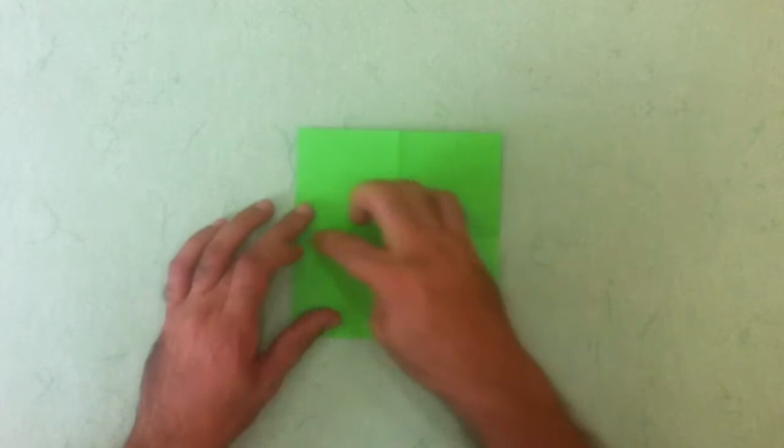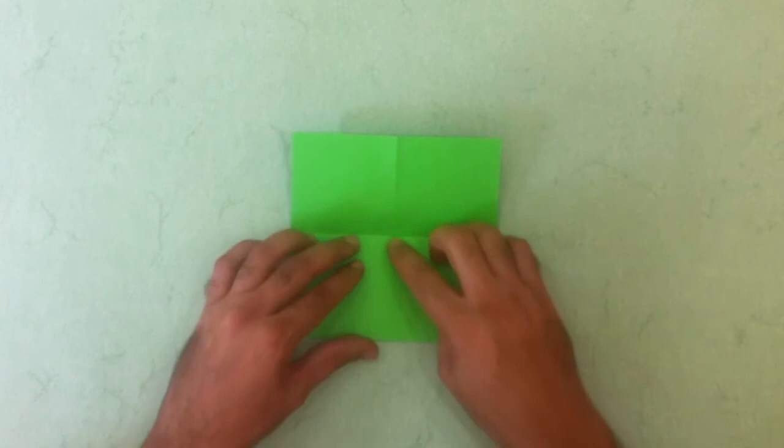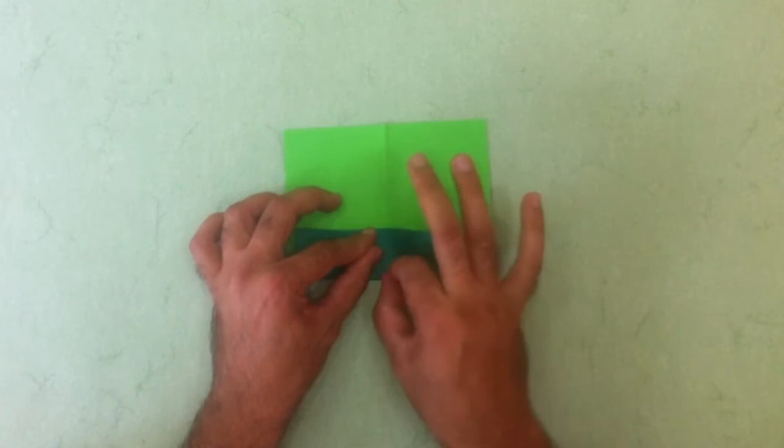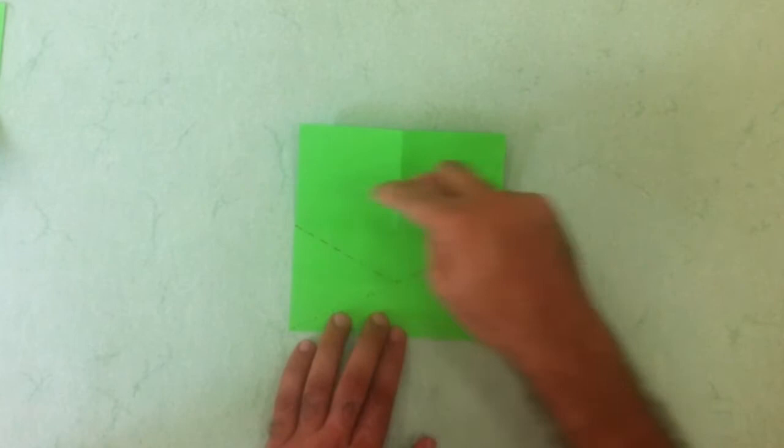So we have both valley and a mountain fold lines on the square. Next is to mark the quarter sign here on a pinch and next we are going to do some diagonals.